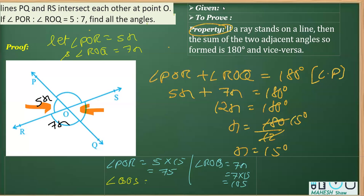...angle QOS is also equal to 75 degrees, and the reason is vertically opposite angles. And likewise you can say these two are also vertically opposite angles.